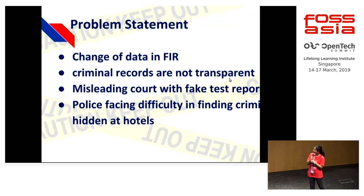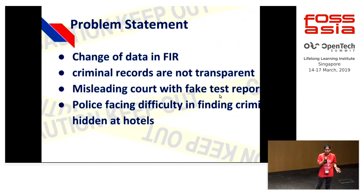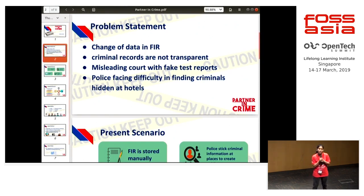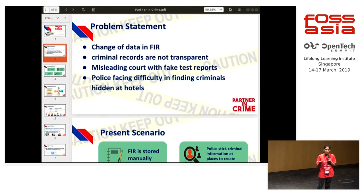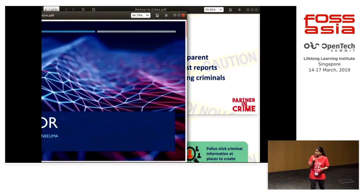Problem statement: there is a change of data in the FIR. Because the data is stored manually, the FIR can be changed or manipulated in favor of the offender. Criminal records are not transparent and are not reaching a wider audience. When the judge asks for any forensic or medical test reports, they are manipulated because they are transferred through many middlemen. Police are also facing difficulty in finding criminals who are hiding in hotels, and this affects the hotel's reputation and creates disturbance for common people.